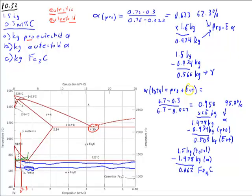So we were able to calculate the pro-eutectoid alpha right there, and the eutectoid alpha. We had to subtract it from the total, but we got it. And the mass of the cementite.